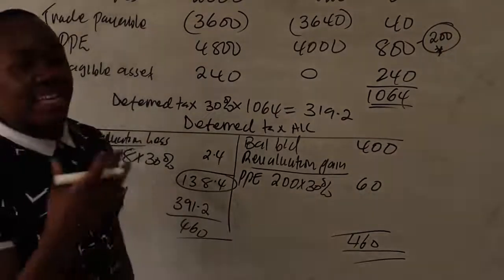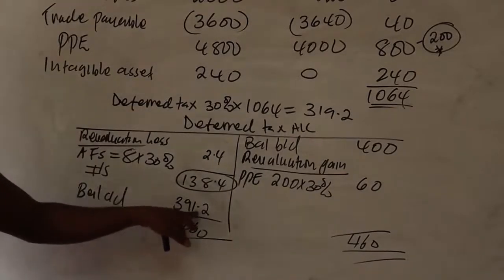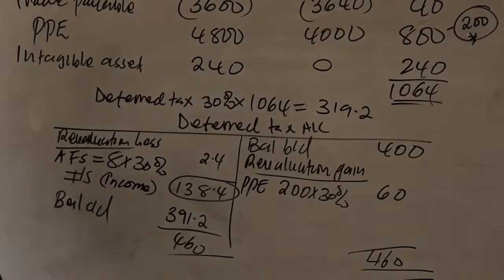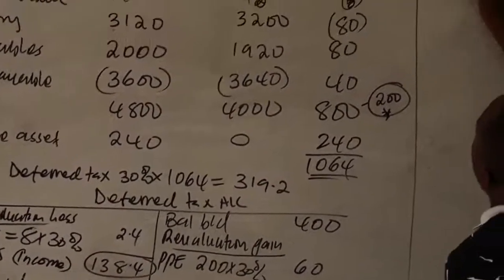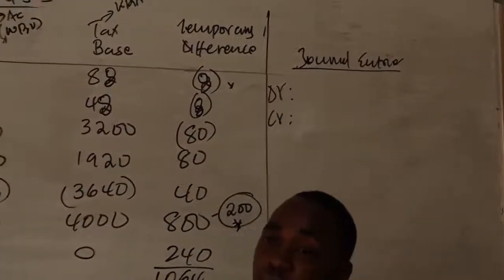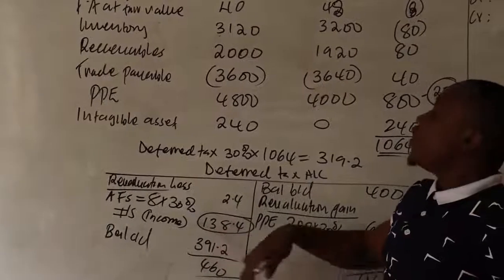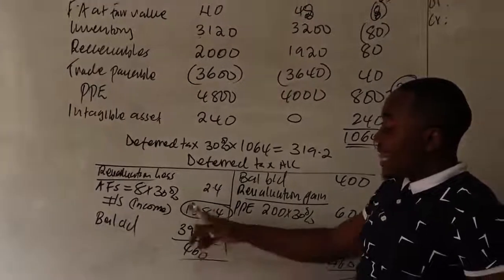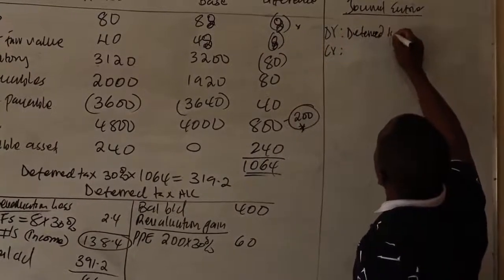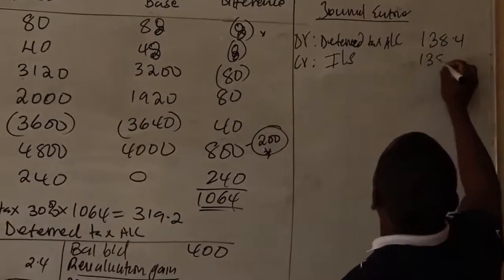The journal entry: debit Deferred Tax Account with 138.4, credit Income Statement with 138.4. This records the reduction in deferred tax liability as income. That's how you record the journal entry — the change in deferred tax determines whether you debit or credit the income statement.